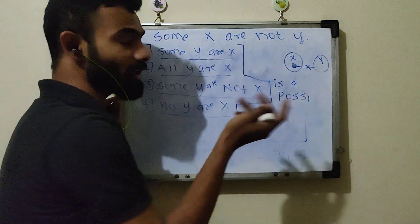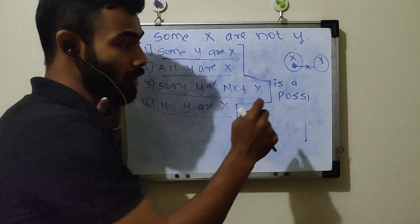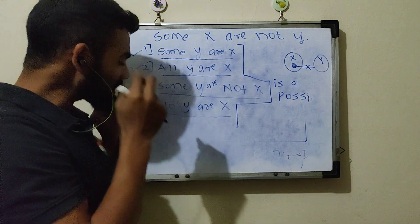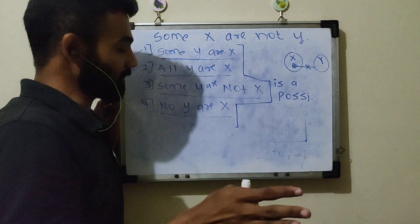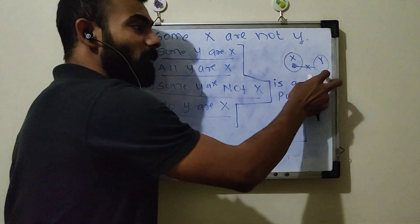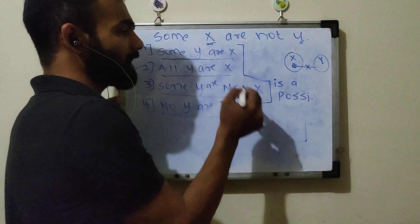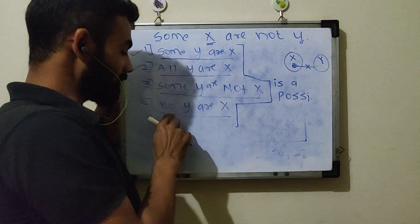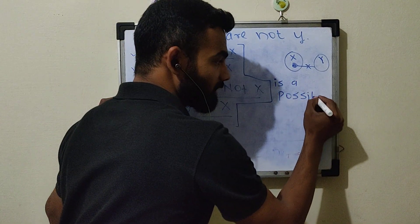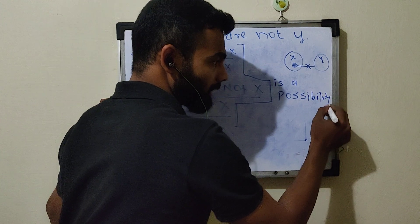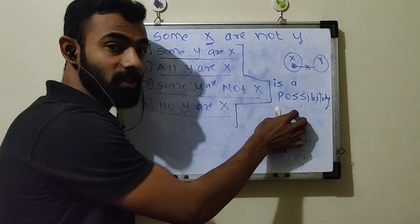'Some Y are not X' — कुछ Y, X नहीं भी हो सकते — ये भी correct होगा only in the possibility. And last, 'No Y are X' — अगर मैंने सिर्फ इतना बोल दिया कि No Y are X, तो ऐसे हम definite conclusion नहीं बोल सकते, because information सिर्फ X के बारे में दी है, और वो भी shaded part के बारे में। No Y are X — ये correct होगा only in the possibility.